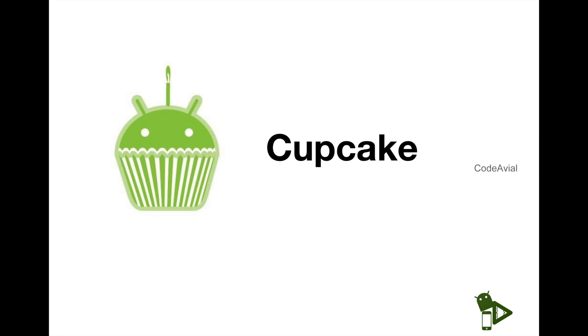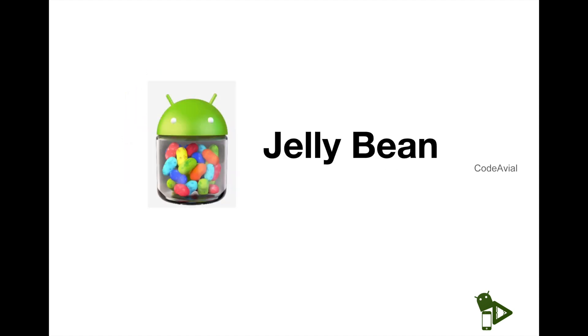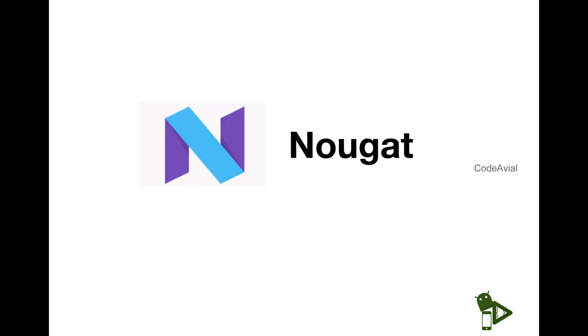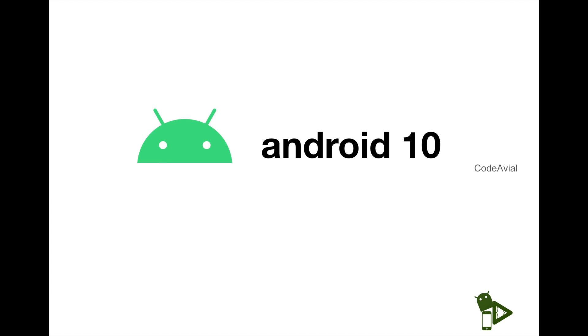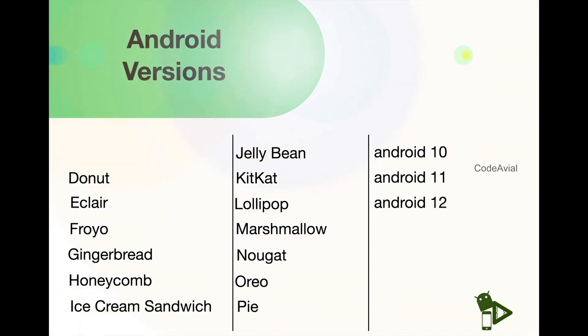The Android versions named like desserts include: Cupcake, Donut, Eclair, Froyo, Gingerbread, Honeycomb, Ice Cream Sandwich, Jelly Bean, KitKat, Lollipop, Marshmallow, Nougat, Oreo, and Pie. Then came Android 10 and Android 11. In total, there are 14 versions of Android. Android Studio is available for app development.